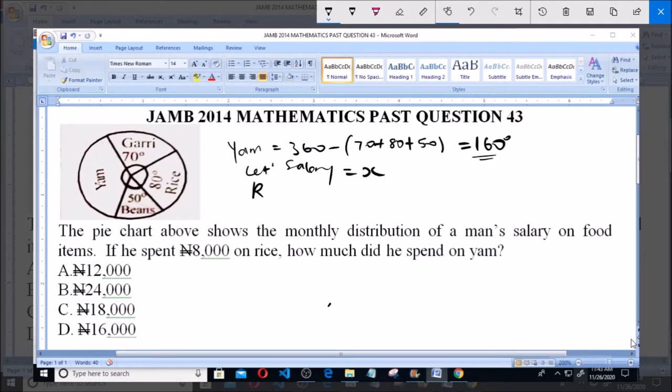So that means rice, which is 8,000 Naira—you know he spent 8,000 Naira on rice—is equal to 80 degrees over 360 multiplied by x.